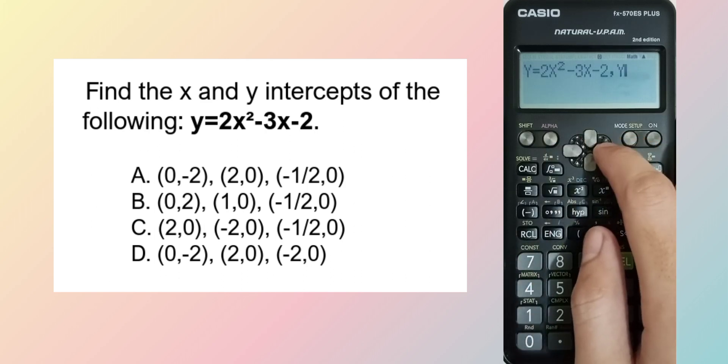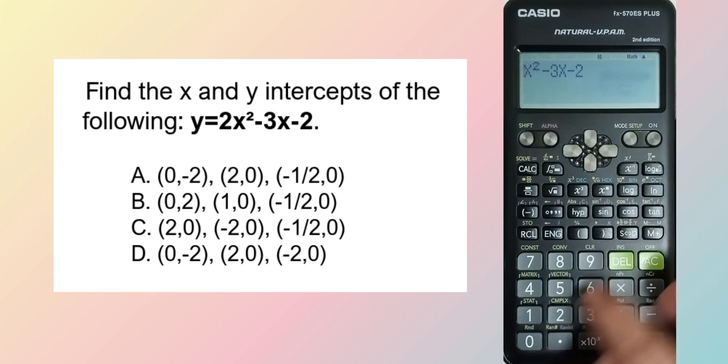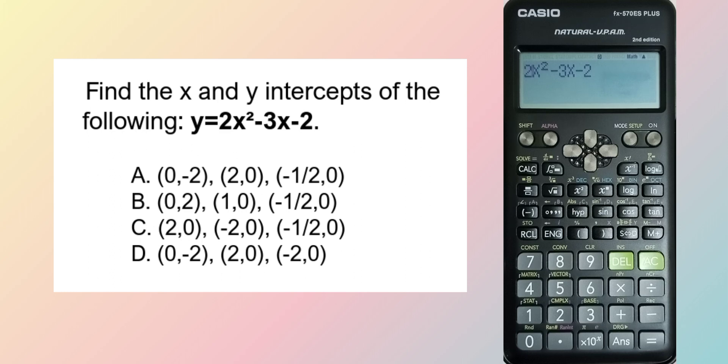y equal to 0. Setting y equal to 0, we have 2x² - 3x - 2 = 0. Seems familiar?